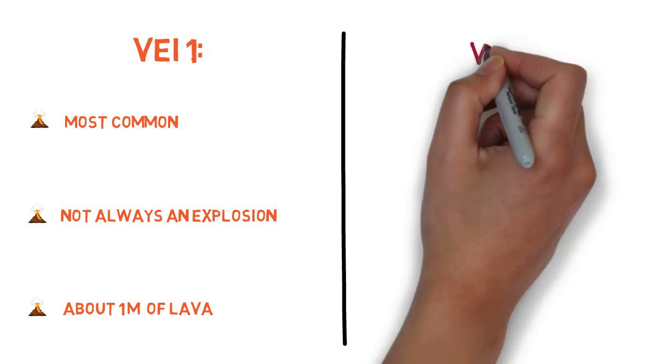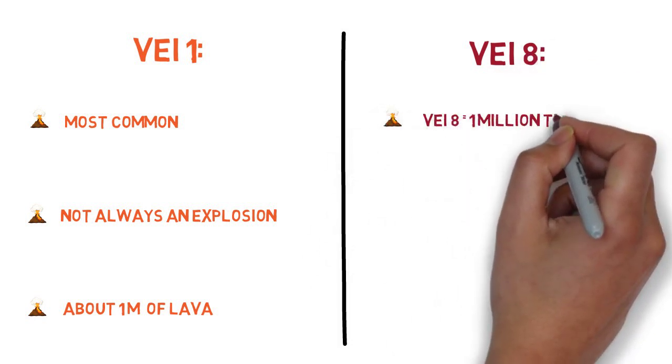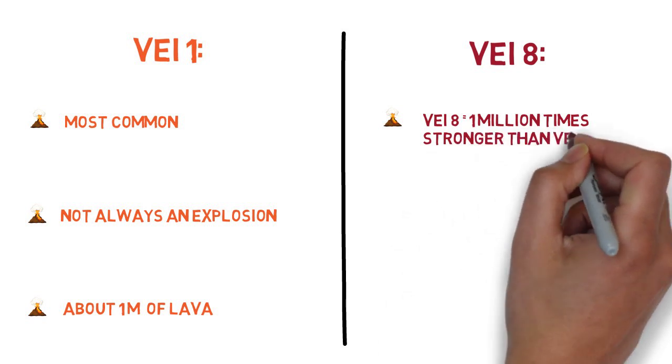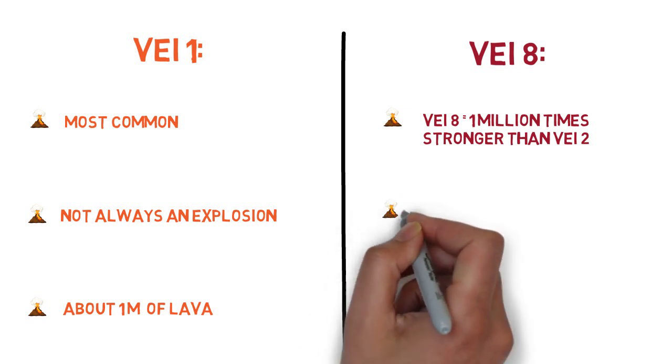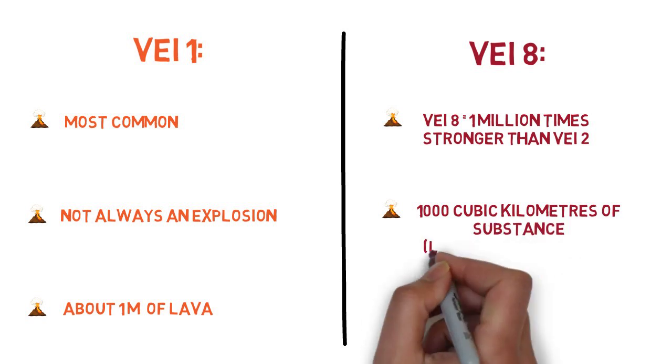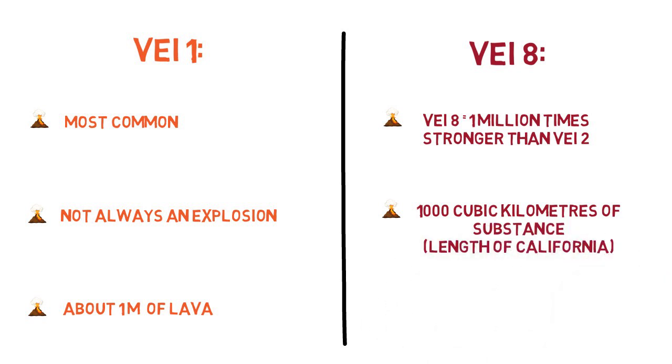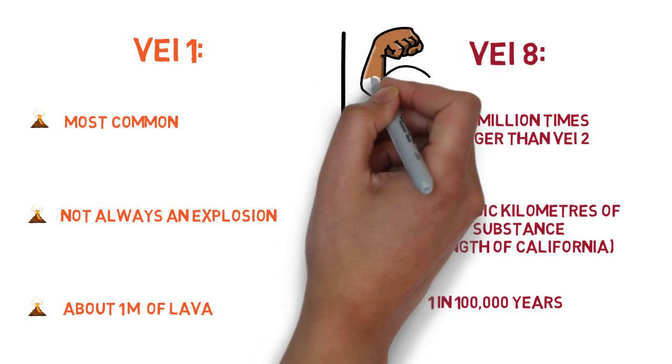This scale progresses up to level eight, with each level along the index being 10 times more powerful than the previous one. Luckily, supervolcanoes which have previously reported eruptions as high as level eight on the volcanic explosivity index at 1,000 cubic kilometers of substance, equivalent to the length of California, only occur once every 100,000 years on average. Also, it's worth noting that while these supervolcanoes may have once had a VEI of 8, that is not to say that future explosions will be anywhere near as powerful as that.